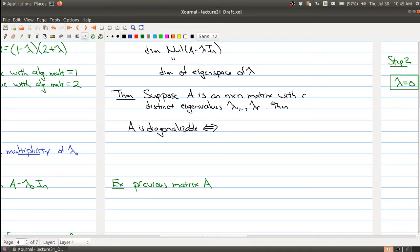Suppose that A is an n by n matrix with r distinct eigenvalues. We're in the case where r may be strictly less than n. How do you decide whether your matrix is diagonalizable? It's going to be diagonalizable if and only if the geometric multiplicity of lambda i is equal to the algebraic multiplicity of lambda i for all i going from 1 to r.